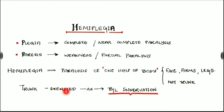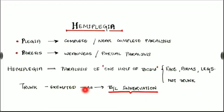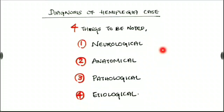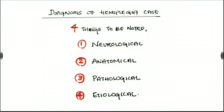Why is the trunk exempted? The trunk is exempted as it has bilateral innervation. For diagnosis of a hemiplegia case, we have to keep four things in mind: we have to find the neurological reason, secondly the anatomical description, thirdly the pathological cause, and fourth the etiology.